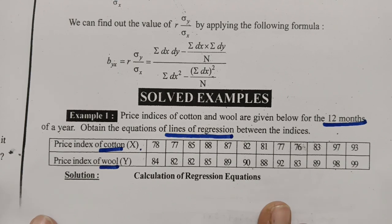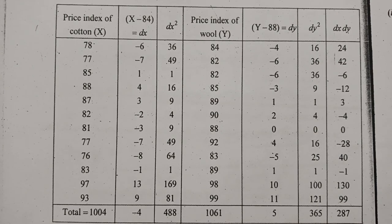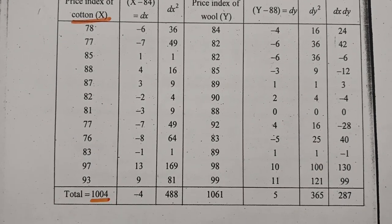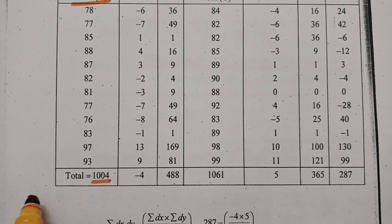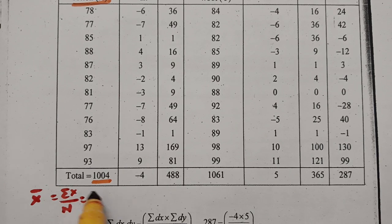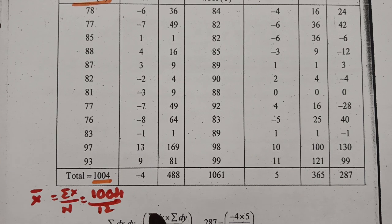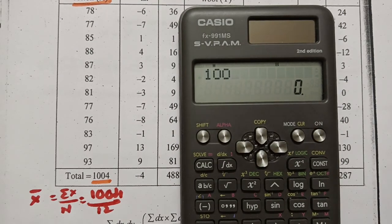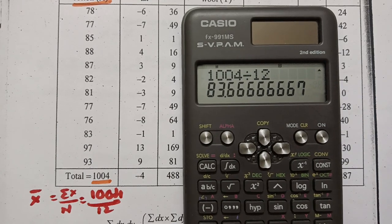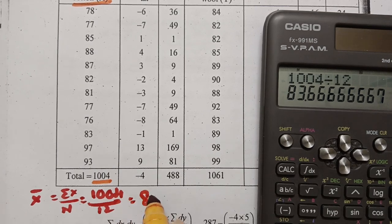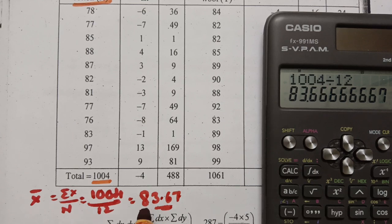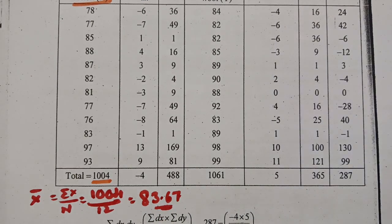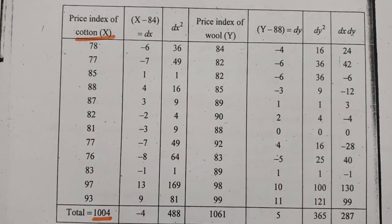For calculating the regression equations we need to set up a table. The price indices of cotton form the x column. The total is 1004, so x̄ = Σx/n = 1004/12 = 83.67. Since this is a fraction — not a whole number — we shift to the assumed mean formula. The nearest whole number to 83.67 is 84, so the assumed mean for x is 84.